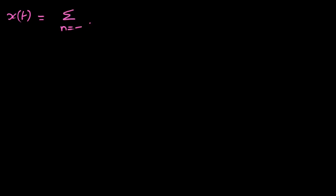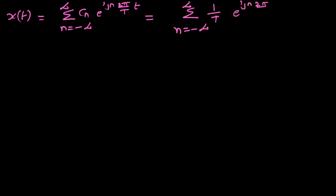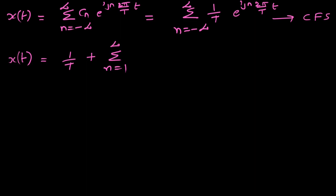x(t) equals the sum from n equals minus infinity to plus infinity of Cn times e to the power j n omega-naught t, where omega-naught is 2 pi over T. In real Fourier series form: x(t) equals a0 over T plus the sum from n equals 1 to infinity of an times cosine n omega-naught t, where a0 equals 1/T and an equals 2/T.